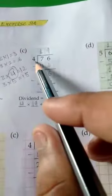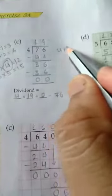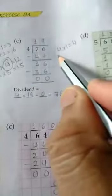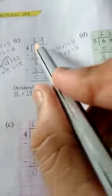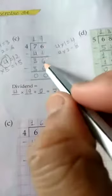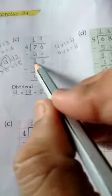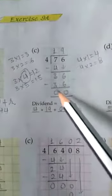Next: 76 divided by 4. First, 7 divided by 4. 4 times 1 is 4, and 4 times 2 is 8. 8 is greater than 7, so write 1 in the quotient and 4 here. 7 minus 4 is equal to 3. Bring down 6, so it will be 36. 36 divided by 4: 4 times 9 is 36. Write 9 in the quotient and 36 here. 36 minus 36 is 0, and 3 minus 3 is 0.